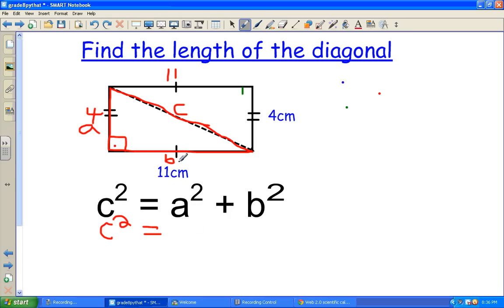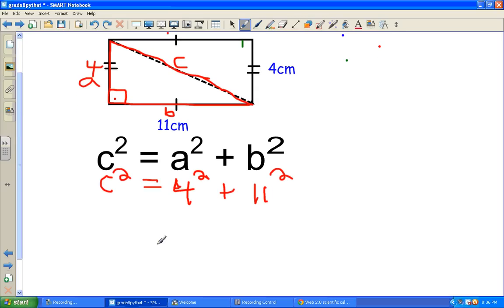Doesn't really matter which one you label A or B. It will still work out. So A is 4, so we'll put in 4. And then it's got to be squared. Then we'll put in B, which is 11. And we are going to end up having to square it as well.